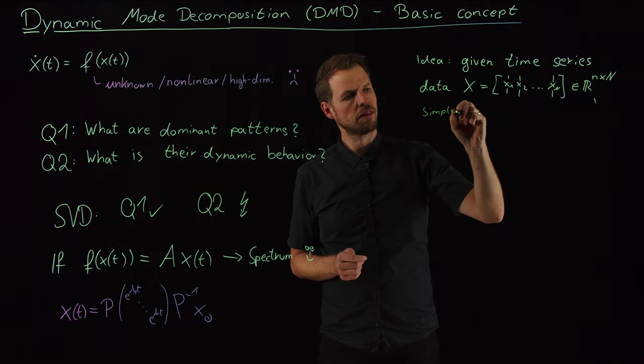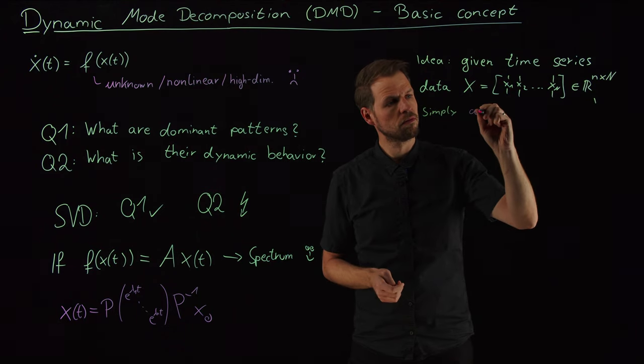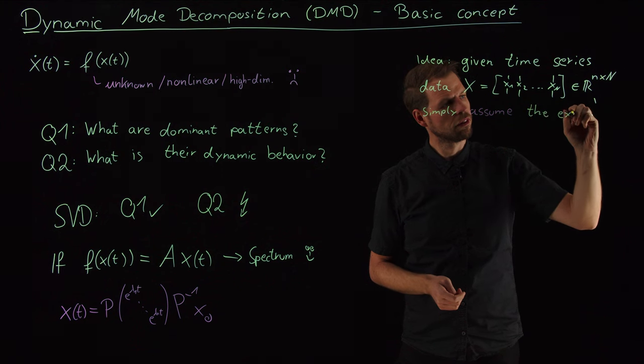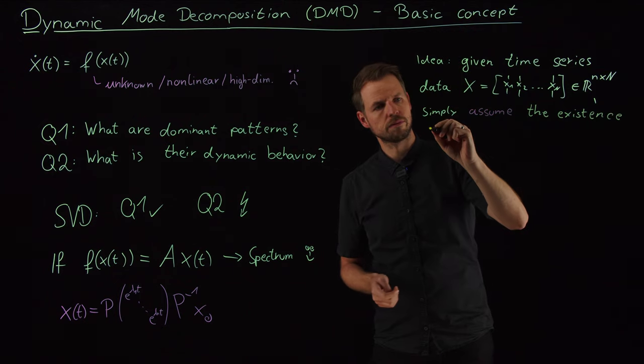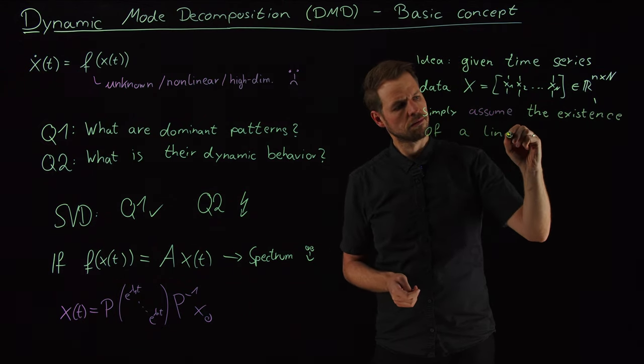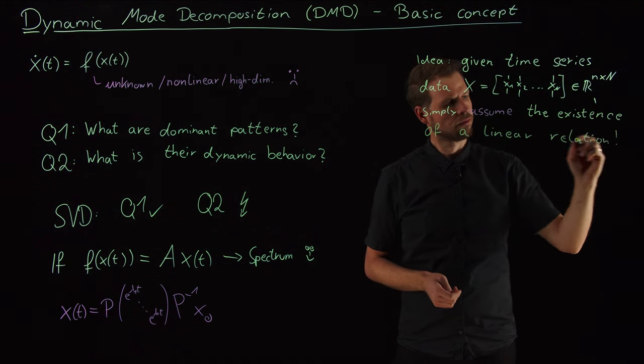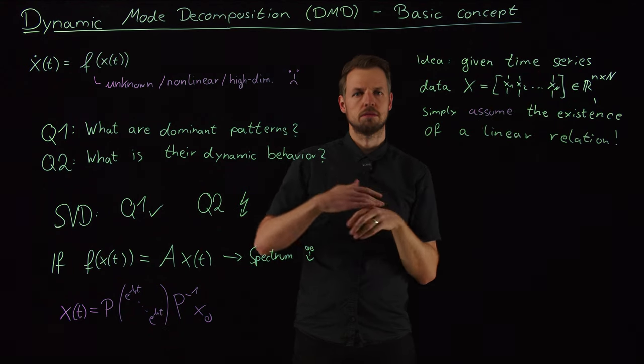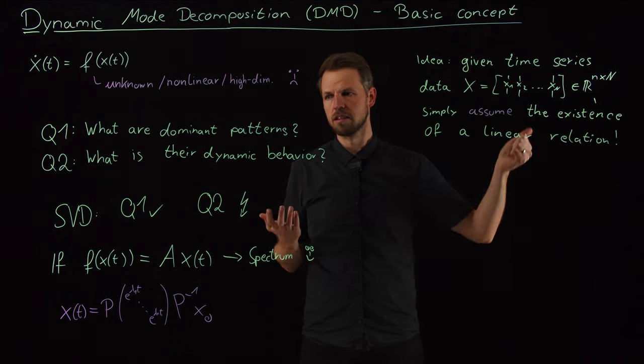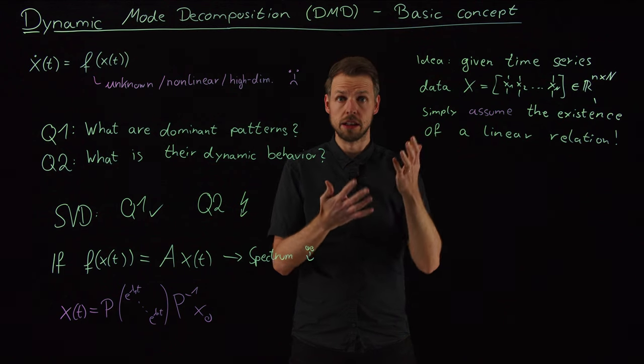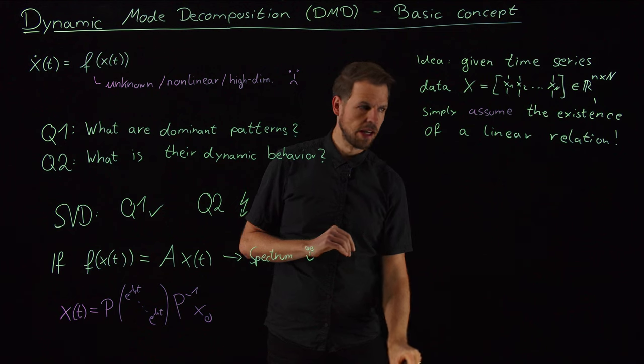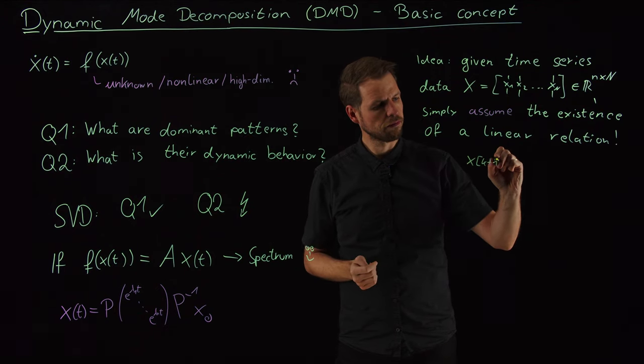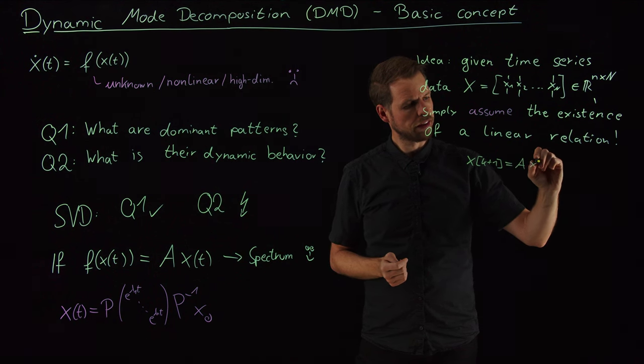So given such a matrix, simply, and this is the big assumption, simply assume the existence of a linear relation. And so this is obviously a very strong assumption, which I say, we have a data set, we have no idea what created this data. At least it's a dynamic system, sure, but we don't know whether it's a linear system, whether it's a nonlinear system, how strongly nonlinear this behavior actually is, and so on. So let's get rid of all these ideas, and let's just assume that there is a linear relation.